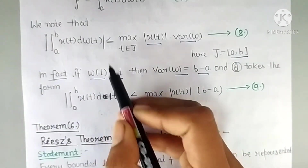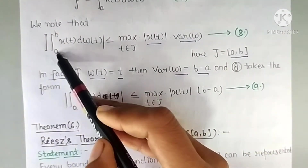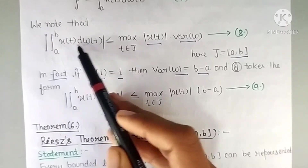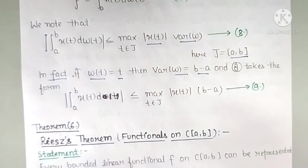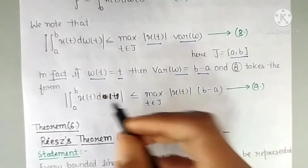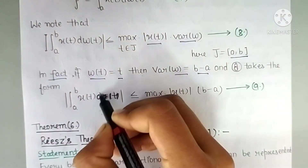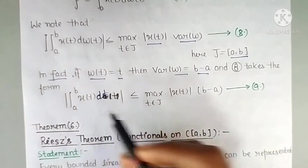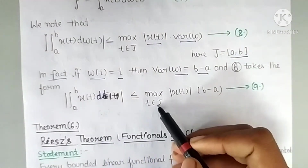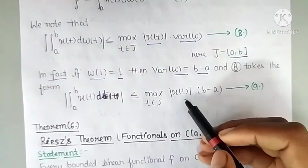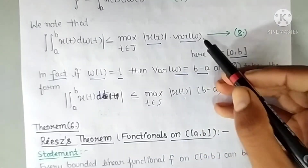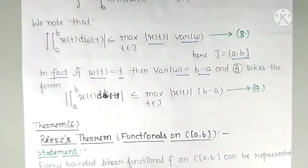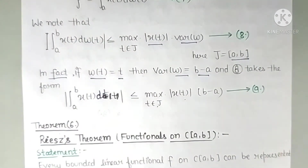So substituting w(t) = t, we get: the integral from a to b of x(t) dt ≤ max|x(t)| · (b − a). This is equation number 9.